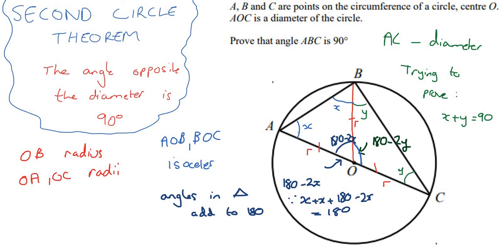Where can we go next? Well, we know that AOC is a diameter, which means it's a straight line. In particular, any angles that are formed on this line must add up to 180. So angles on a straight line add to 180. So this tells us that our two angles here must add up to 180. So 180 minus 2X plus 180 minus 2Y equals 180.